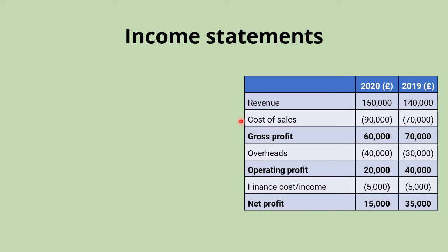Working down, cost of sales is the direct cost of making those goods — mainly the materials that went into making the product, such as leather, laces, and packaging. The figure is shown in brackets to indicate it is a cost rather than income. Gross profit is then calculated using the formula: revenue minus cost of sales. This takes all money coming in and subtracts only the direct costs of making the product.